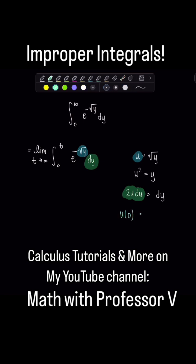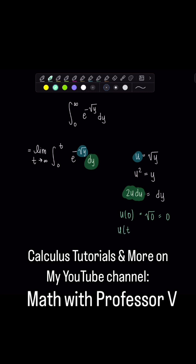So u of 0 is going to be square root of 0, that's 0. And then u of t will be square root of t. That's my new upper limit.